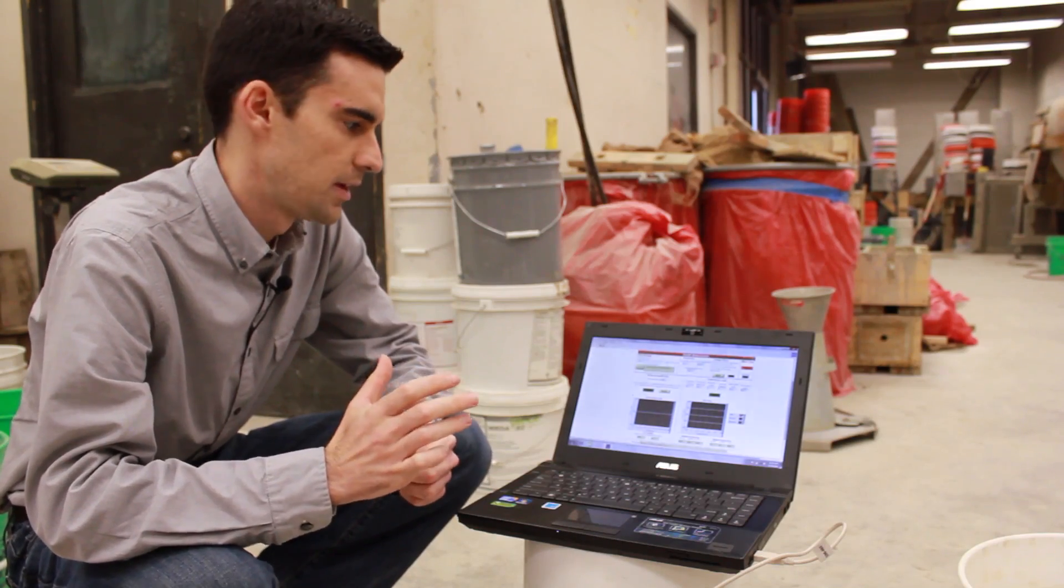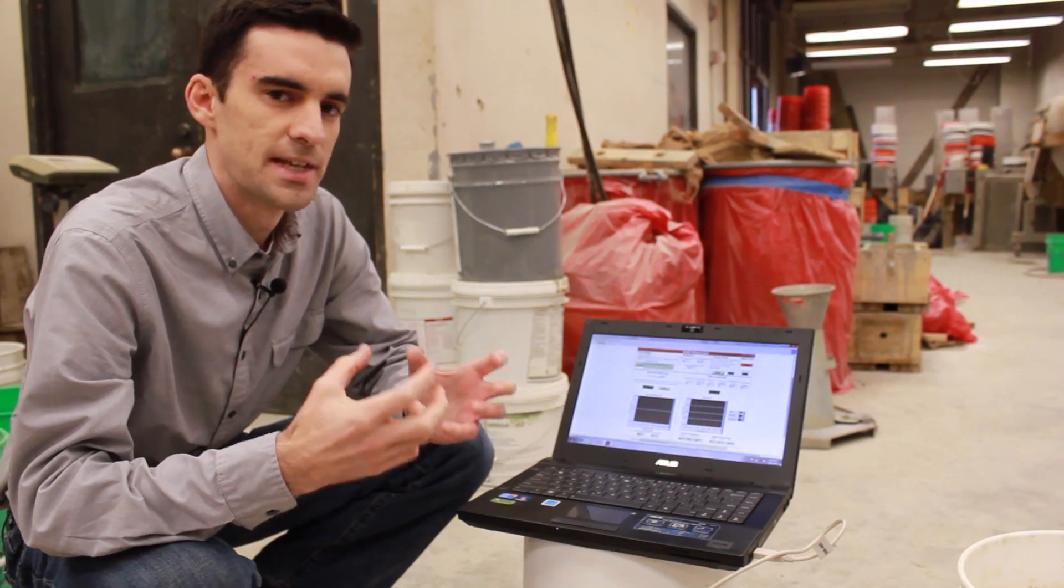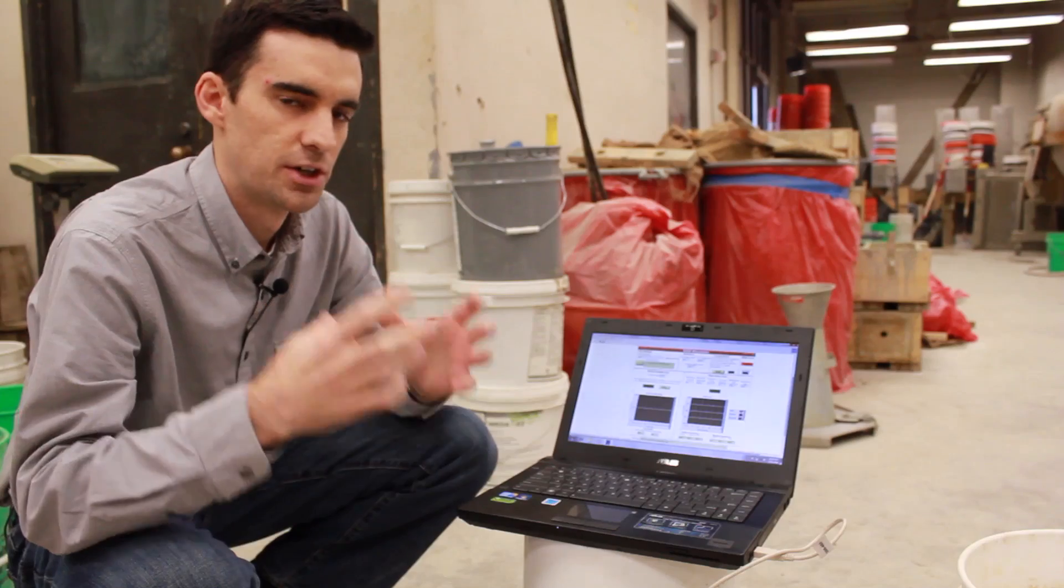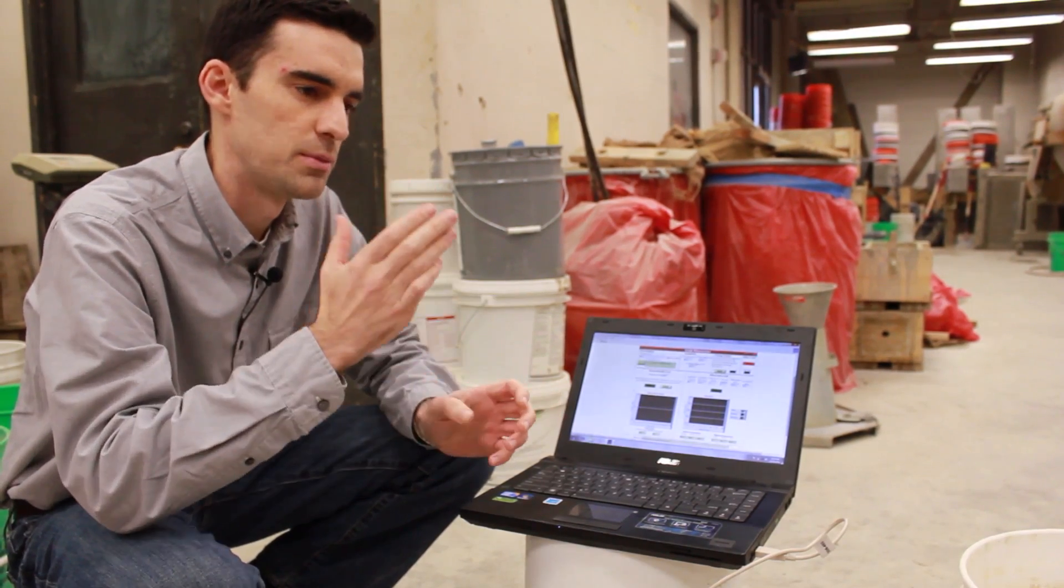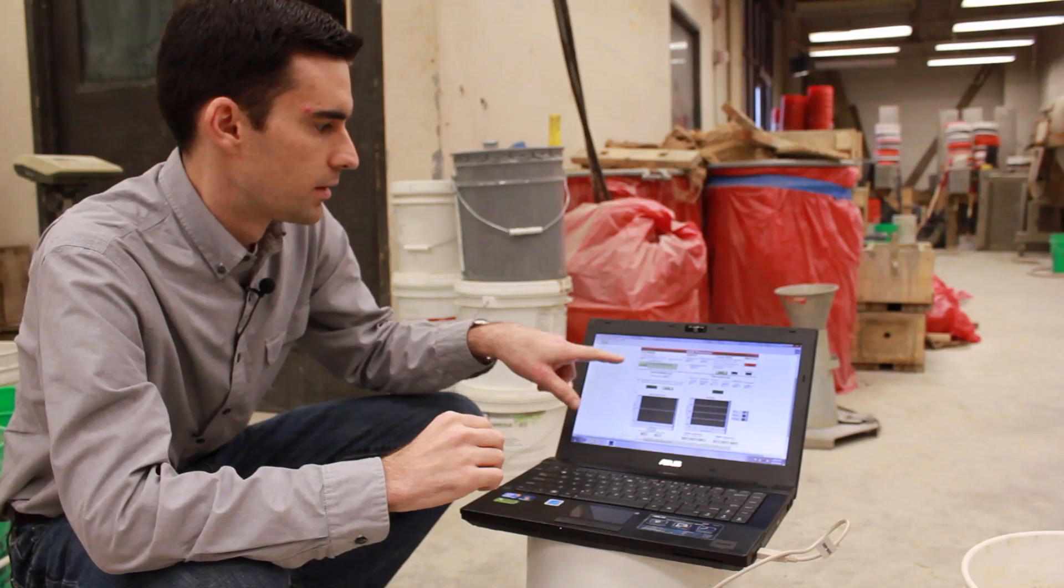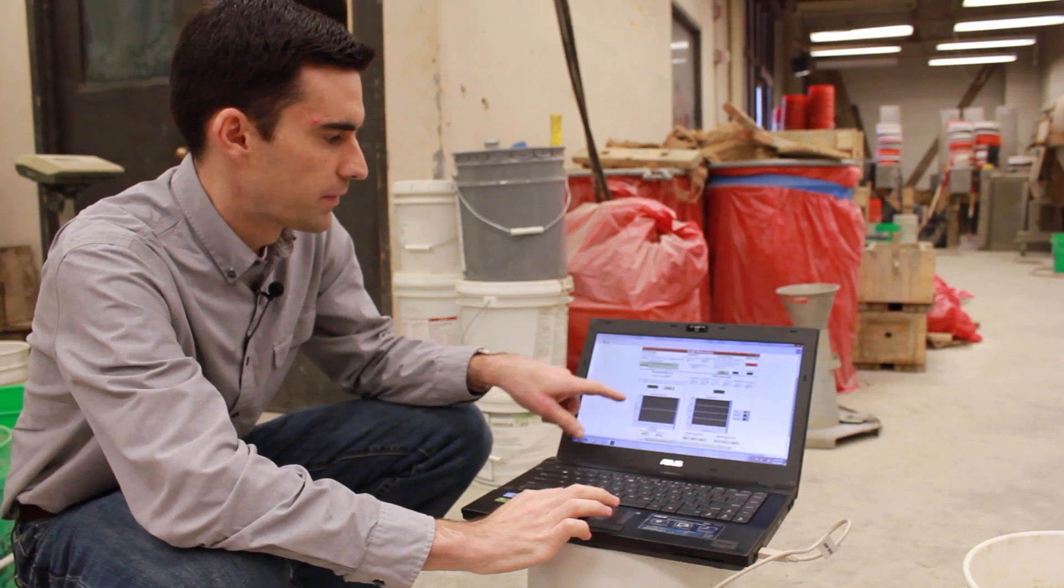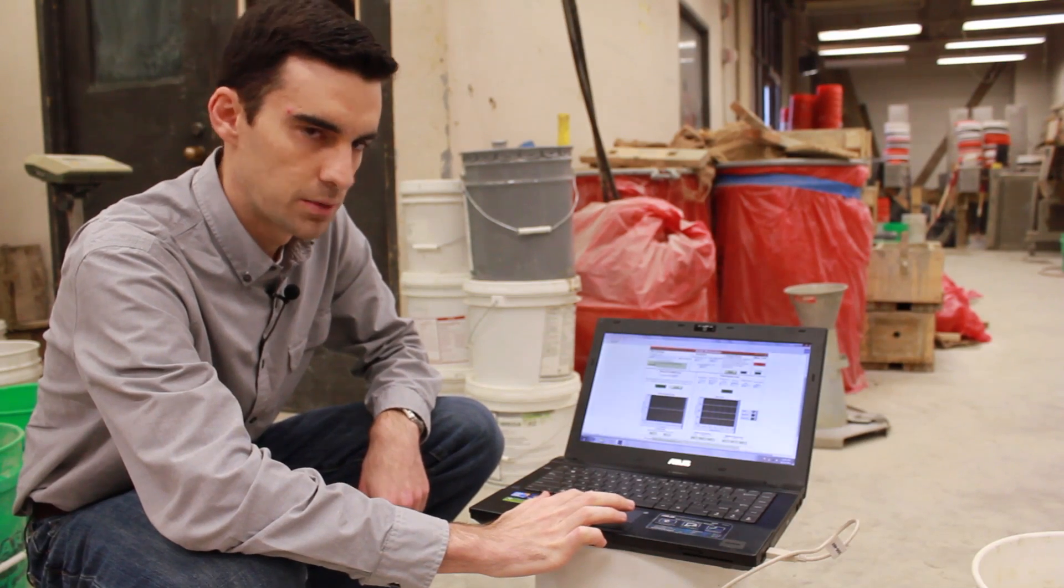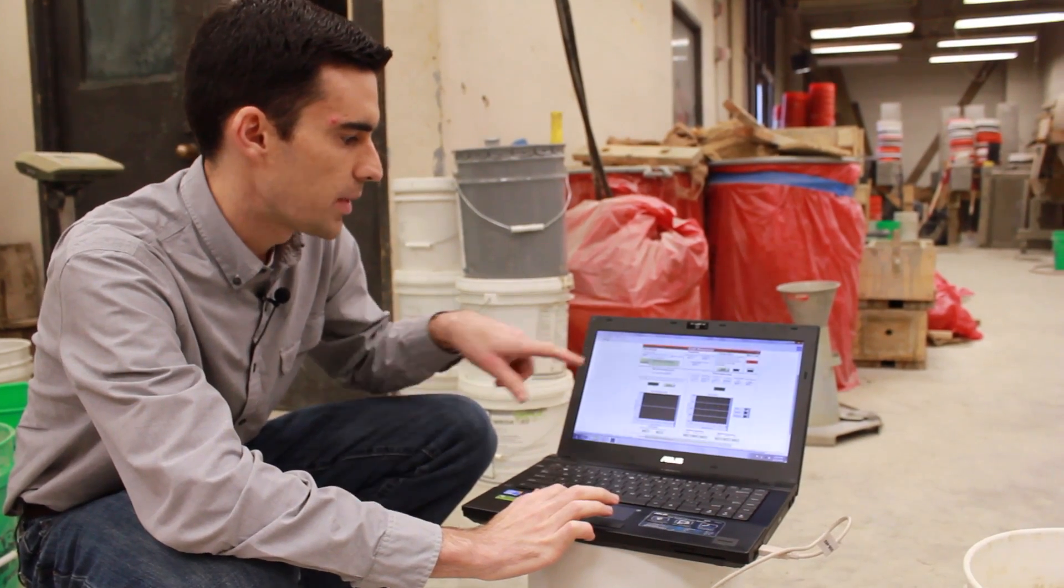We'll start with the stress growth test. The stress growth test measures the static yield stress. So it's very important that we have a consistent shear history. In other words, the time since we've filled the container until the time we start the test should be consistent in order to compare two or more tests. The software is already set up to operate at 0.025 revolutions per second, which is the speed we want. So all we have to do is press start.